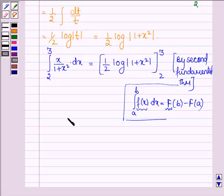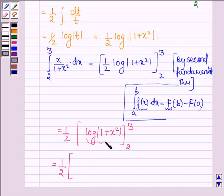Thus, this can be written as (1/2)log|1+x²| from 2 to 3. This can further be written as (1/2) times [the value of this function at the upper limit, which is log